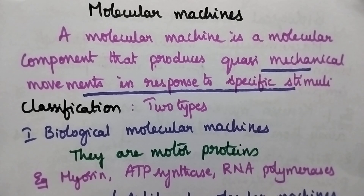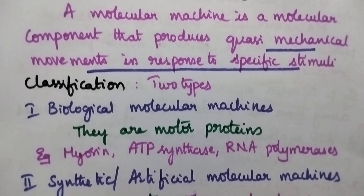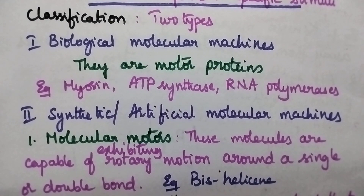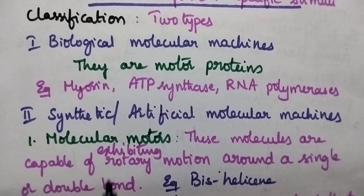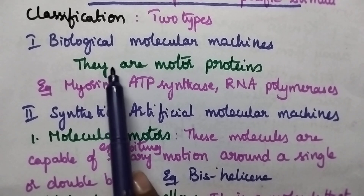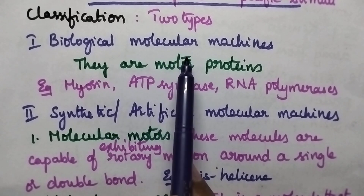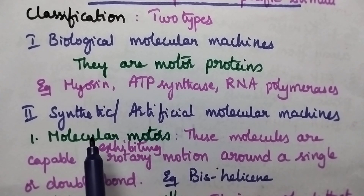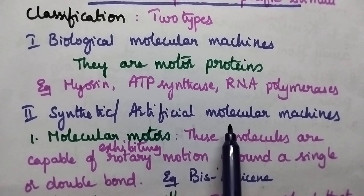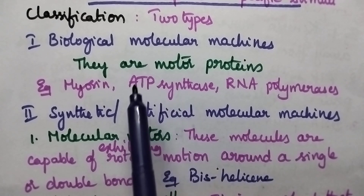These molecular machines can be broadly classified into two types: biological molecular machines and synthetic or artificial molecular machines.